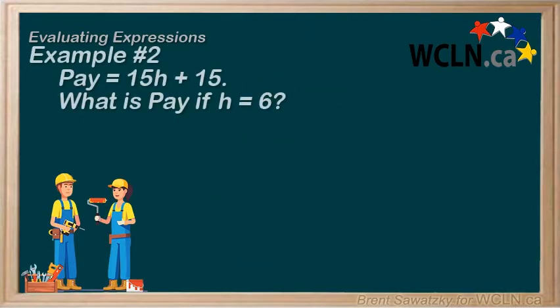Example 2. Your daily pay is calculated using pay equals 15h plus 15 to pay for your hours and transportation time. If you work 6 hours how much did you earn that day? We have an equation for your pay in terms of the variable h representing the number of hours worked in a day. We're interested in the pay for a day when h was specifically 6.